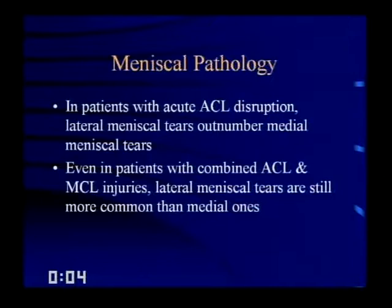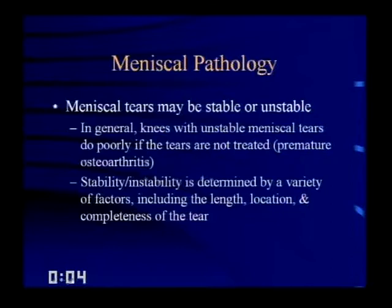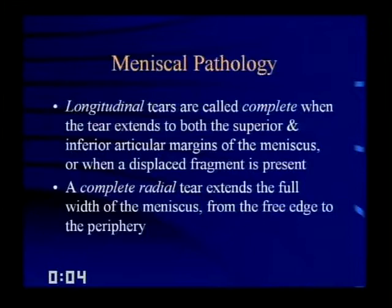Meniscal tears can be either stable or unstable. Knees with unstable tears do poorly if untreated, leading to premature osteoarthritis. Stability is determined by the tear's length, location, and completeness. Longitudinal tears are complete if the tear extends to both superior and inferior articular margins or when a displaced fragment is present. A complete radial tear extends the full width of the meniscus from the free edge to the periphery — essentially rendering the meniscus useless for load distribution.